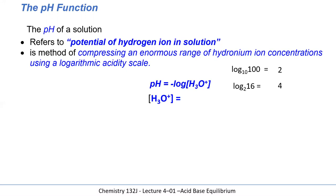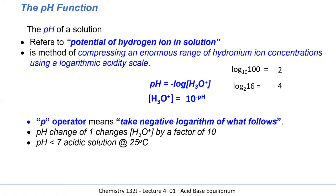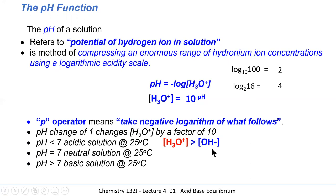We can also derive the equation that the hydronium concentration equals 10 to the minus pH. So if the pH of a solution is 7, the hydronium ion concentration is 1×10⁻⁷. If it's 6, the hydronium ion concentration is 1×10⁻⁶. If pH is below 7, hydronium is greater than hydroxide; at pH 7 it's neutral; above 7, hydroxide is greater than hydronium.